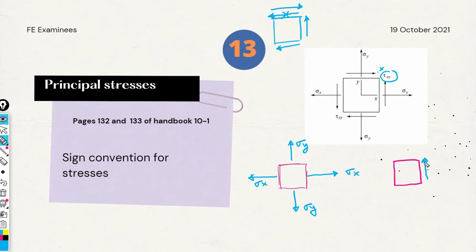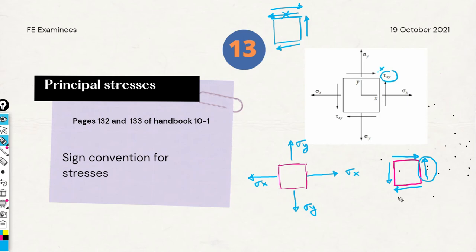Using this trick: wherever you have an arrow tip, the adjacent face must also have a converging arrow tip; wherever you don't have a tip, you won't have one on the adjacent face either. Just remember the positive reference direction and this pattern will help you find all other positive directions easily to maintain equilibrium of the infinitesimal element. Tensile normal stresses are positive; shear stresses follow the convergence rule.